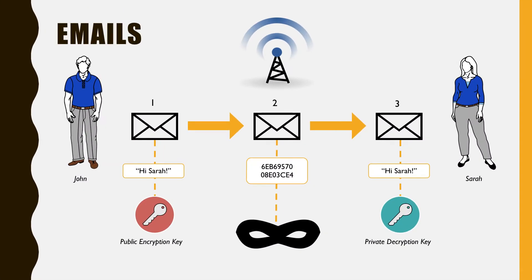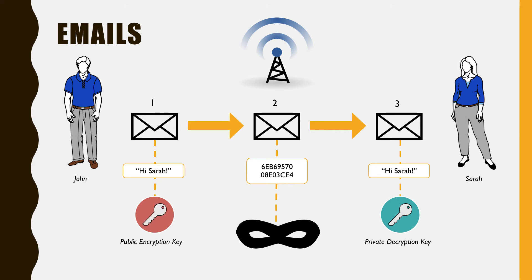For example, let's say that John wishes to send a private email to his work colleague Sarah. John would use the public key to encrypt the information and then send the message to Sarah over the internet. A third party who intervenes at this point might be able to retrieve the encrypted message and the public key, however they will be unable to read the email in its encoded form as access to the private key is kept secure.